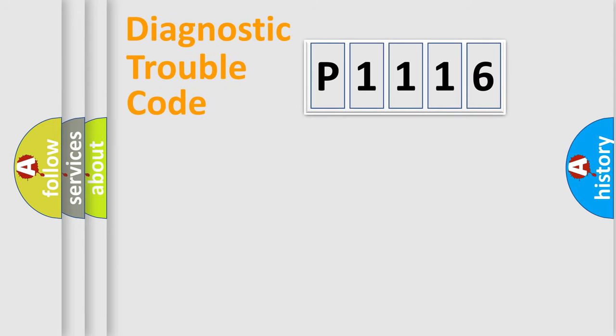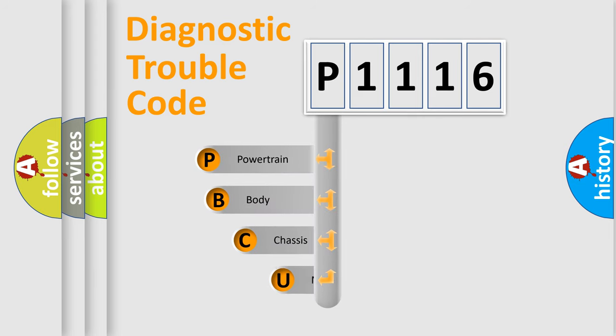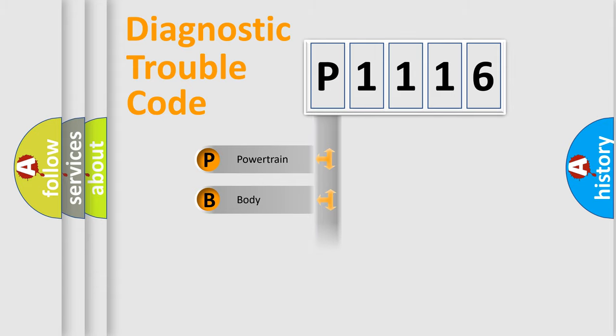Let's do this. First, let's look at the history of diagnostic fault code composition according to the OBD2 protocol, which is unified for all automakers since 2000. We divide the electric system of automobile into four basic units: Powertrain, Body, Chassis, and Network.